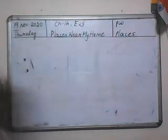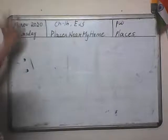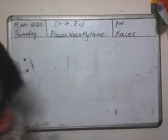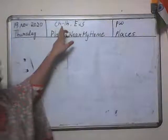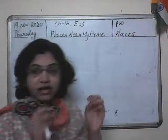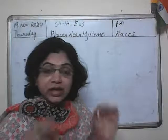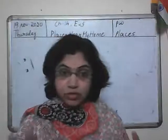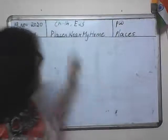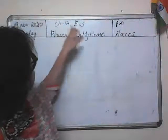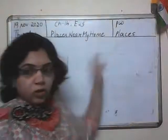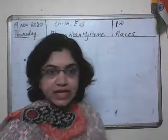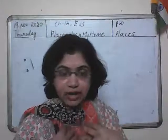So children, today's date is 19th November 2020 and today is Thursday. I am going to start a new chapter from your EVS textbook. The name of the chapter is chapter 14: Places Near My Home.